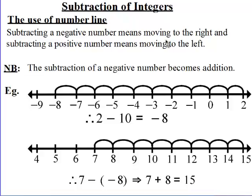We can use the number line to subtract integers. Let's look at the rule associated with this. When subtracting a negative number, it means we are moving to the right of the number line.